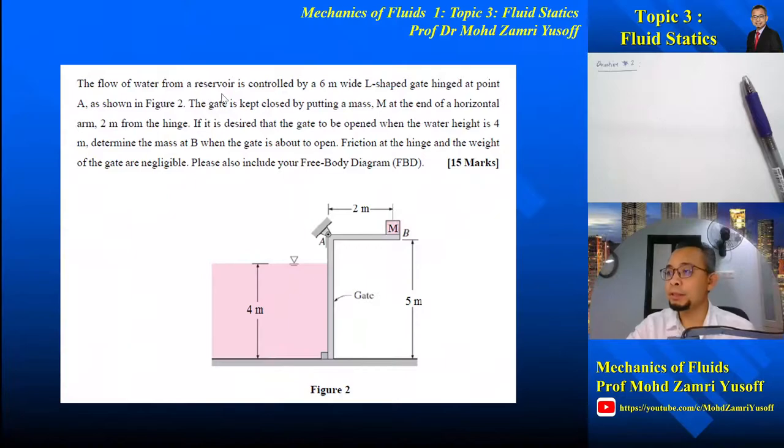The question says that the flow of water from a reservoir is controlled by a 6 meter wide L-shaped gate hinged at point A, as shown in the figure. The gate is kept closed by putting a mass M at the end of a horizontal arm 2 meters from the hinge. If it is desired that the gate be opened when the water height is 4 meters, determine the mass at B when the gate is about to open. Friction at the hinge and the weight of the gate are negligible. And we are also asked to include the free body diagram.